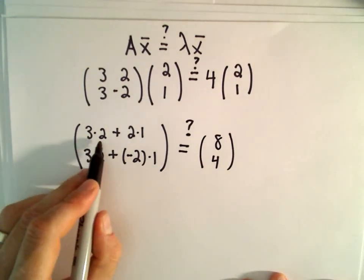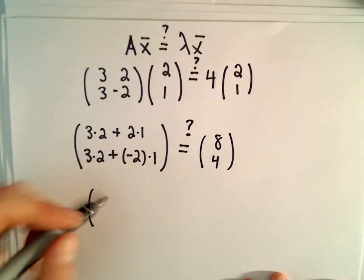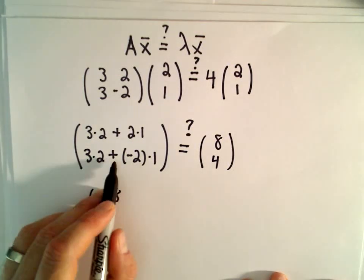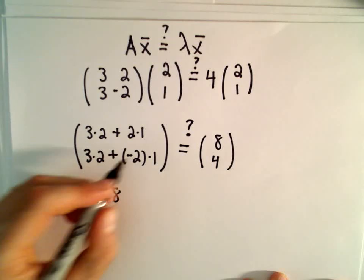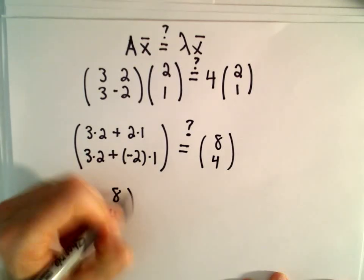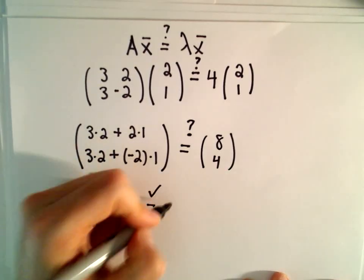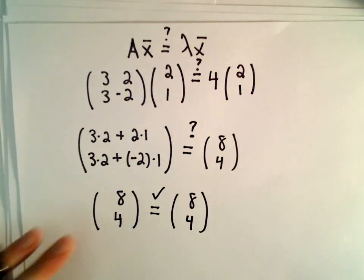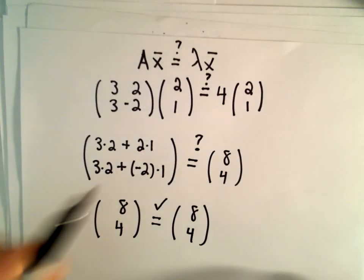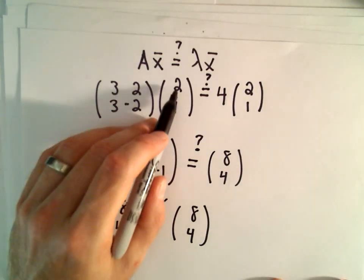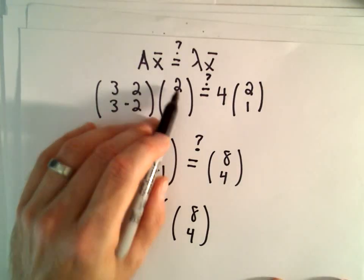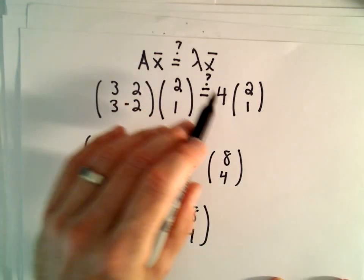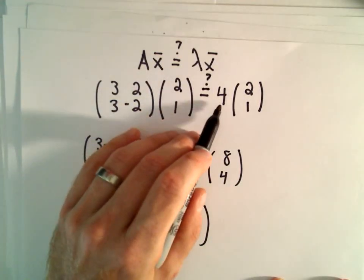Well, on the left side, 3 times 2 is 6, plus 2 times 1 will give us 8. 3 times 2 is 6, plus negative 2, so 6 minus 2 will give us 4. Hey, that certainly does give us equality. So yes, in fact, the vector with entries 2 and 1 is an eigenvector of the matrix A corresponding to the eigenvalue of 4.